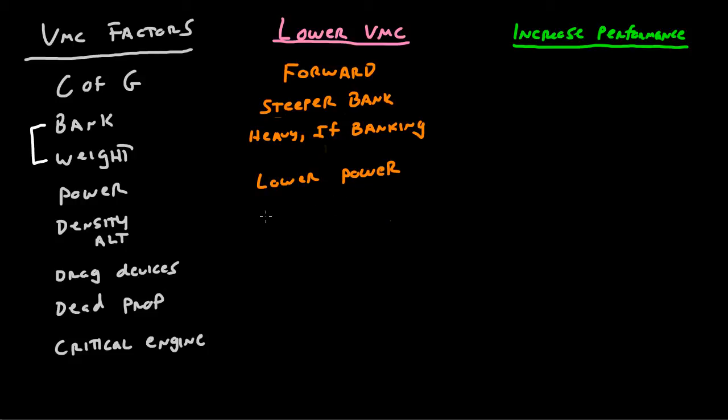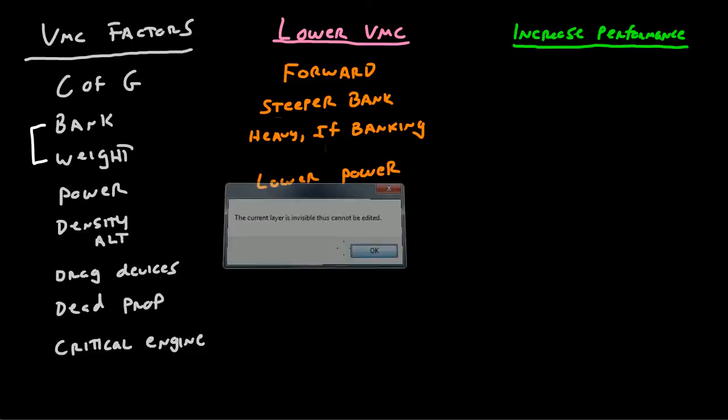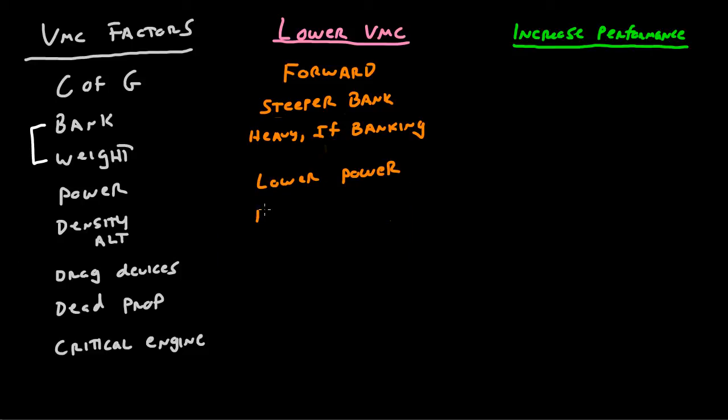So let's write that one in. You want lower power. You also want thinner air. And once again, notice that these two are almost exactly the same. If you lower power, you'll get a lower VMC. If you have thinner air, well, it's the same thing as saying you've got lower power, because as the air gets thin, you do have lower power. So again, you lower VMC. And again, this one is very simple.